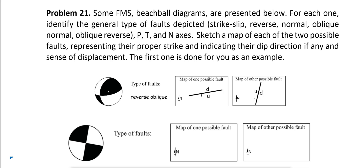In problem 21 we are going to look at the beach ball diagram, or in another word focal mechanisms. This question is requesting to identify the type of the fault and map it, showing which block is moving down or up, and also to place the P, T, and N axes, which stand for pressure, tensile, and null, representing Sigma 2, Sigma 3, and Sigma 1 respectively. N stands for null which is Sigma 2, P stands for pressure representing Sigma 1, and T stands for tension or tensile representing Sigma 3.